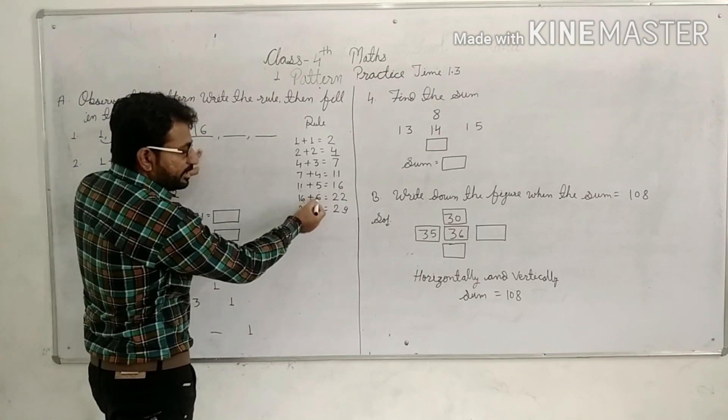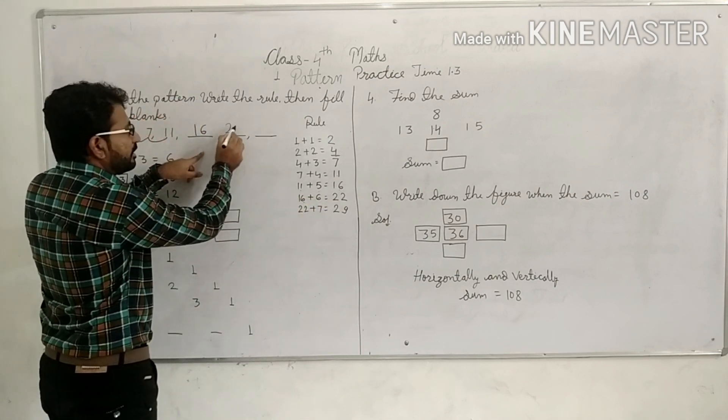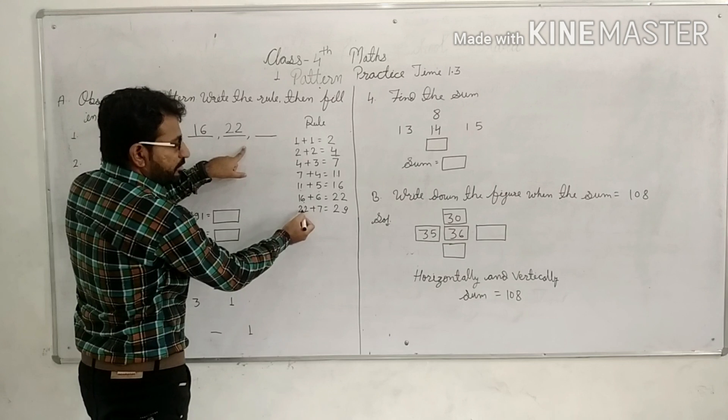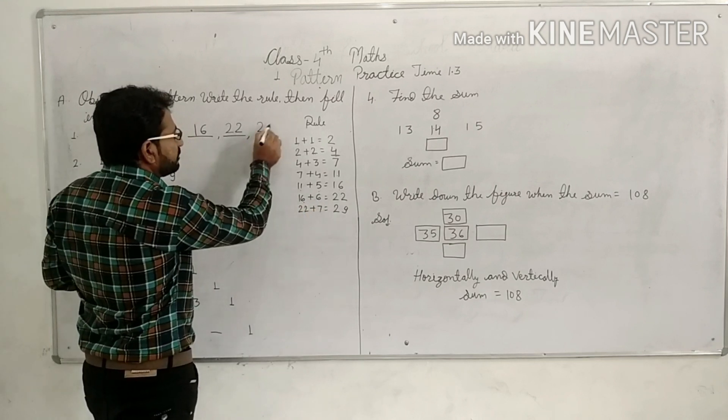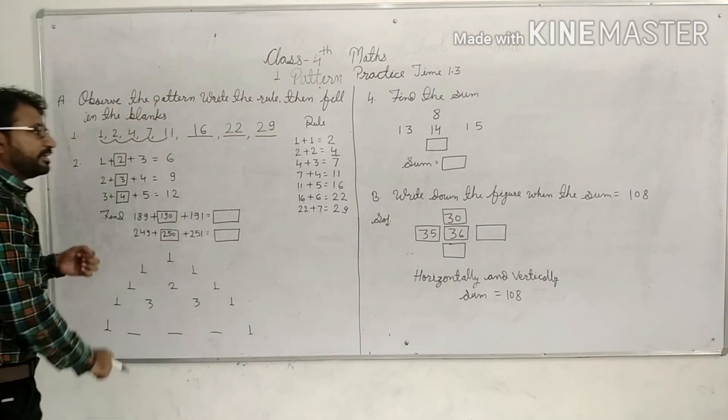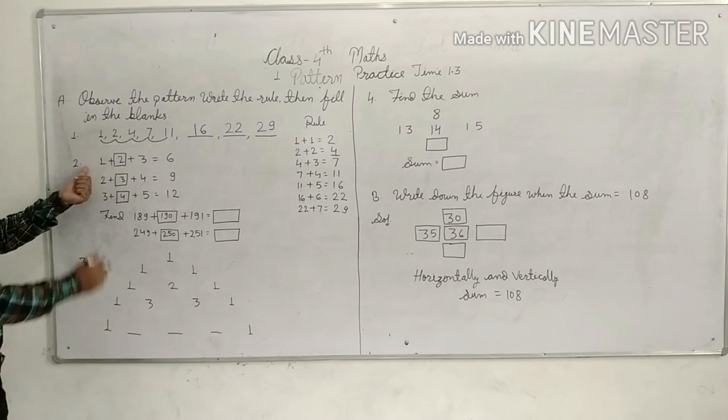Next rule, 16 plus 6 is 22. Next rule, 22 plus 7 is 29. Then we have a pattern heading down.